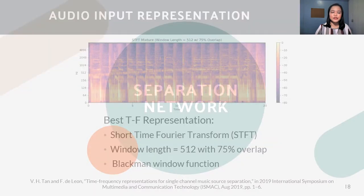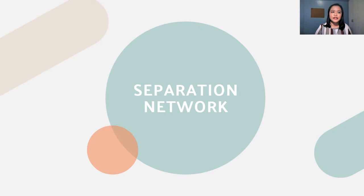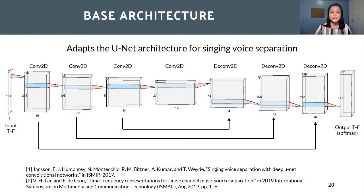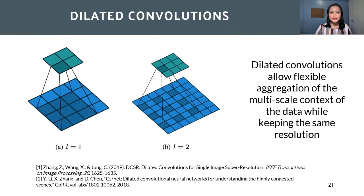Next is our separation block. The base network adapts the U-Net architecture for singing voice separation. Rather than using normal convolutional layers, we utilize dilated convolutions. Dilated convolutions allow flexible aggregation of the multi-scale context of the environment while keeping the same resolution. This could help the network learn different frequency scales, particularly for the vocal track, since the vocal track contains mid to high frequencies.